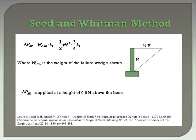The second method is the method by Seed and Whitman, which is an extension of the Mononobe-Okabe method. This method is applicable to conditions where the wall face is vertical and there is no sloping backfill. It assumes a failure wedge defined by the geometry shown in the figure in the slide. The computed seismic thrust is applied at a height of 0.6H above the base.